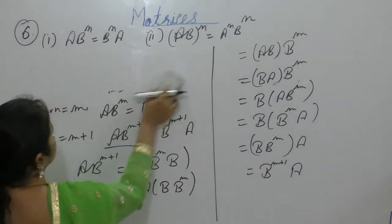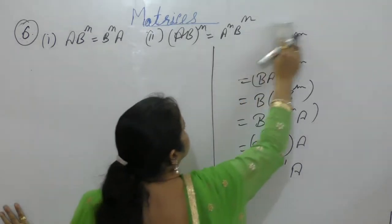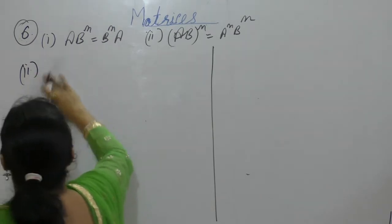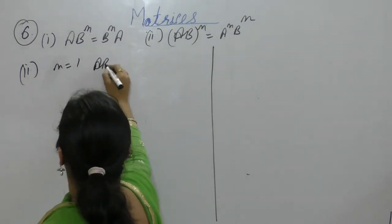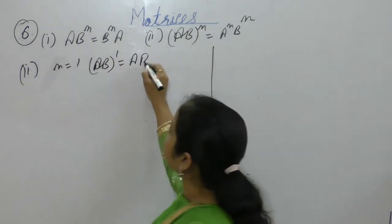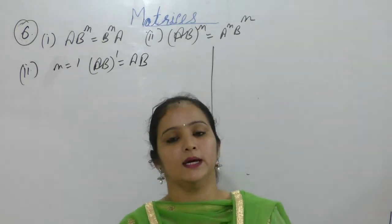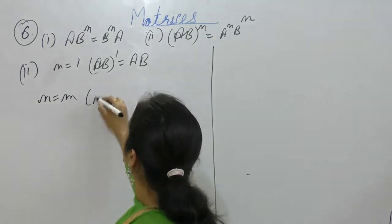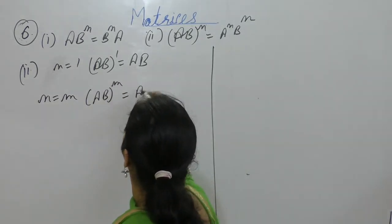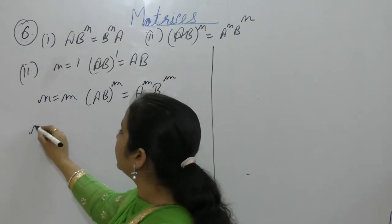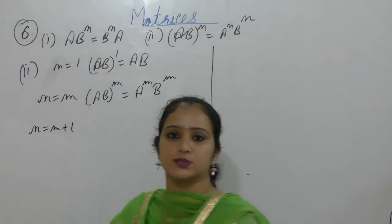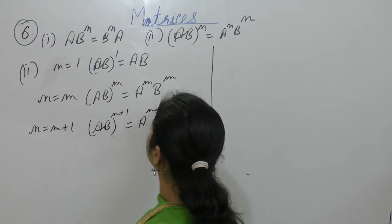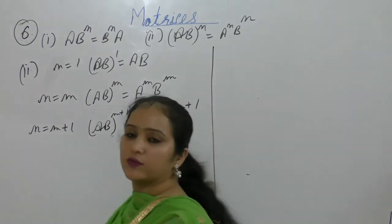Now the second part. Put m equal to 1: (AB)^1 equals A^1·B^1, that is AB equals AB, so the result is true for m equal to 1. Let us assume that result is true for m equal to m, giving A^m·B^m. We need to prove (AB)^(m+1) equals A^(m+1)·B^(m+1), which is what we want to prove.